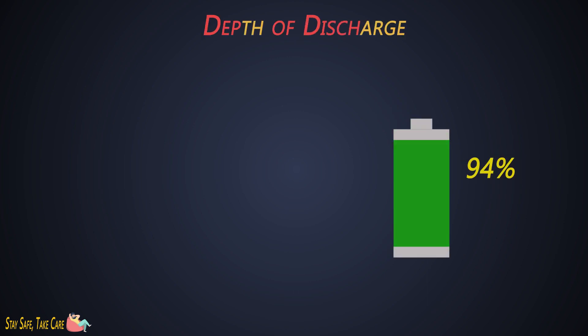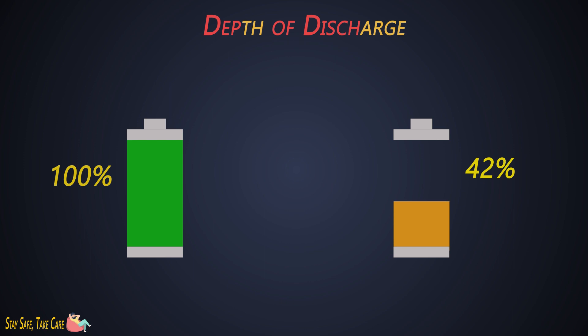Next is the depth of discharge. It indicates the percentage capacity of the battery which has been discharged relative to the overall ideal capacity of the battery.